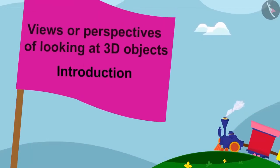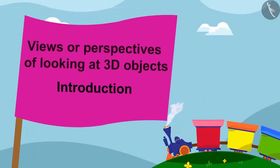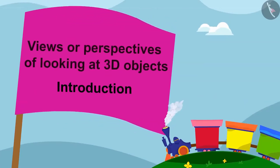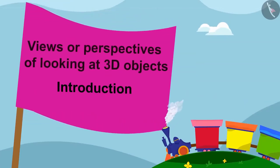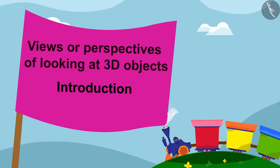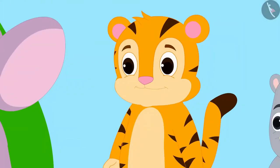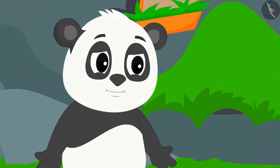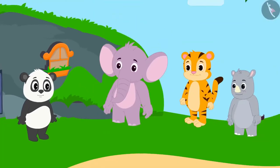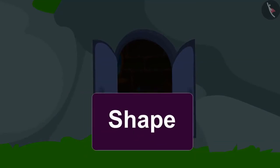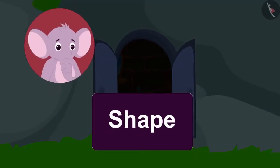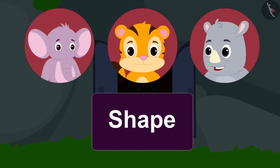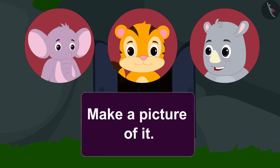In this video, we will learn about the views or perspectives of looking at three-dimensional objects. Appu, Shere Khan, Gaggu and Golu are playing a game. Golu has made a shape out of the boxes in the other room. Appu, Shere Khan and Gaggu will look at that shape by turns and come back and make a picture of it.